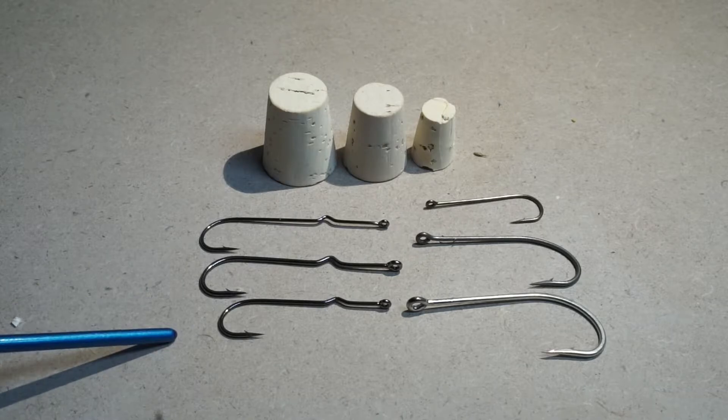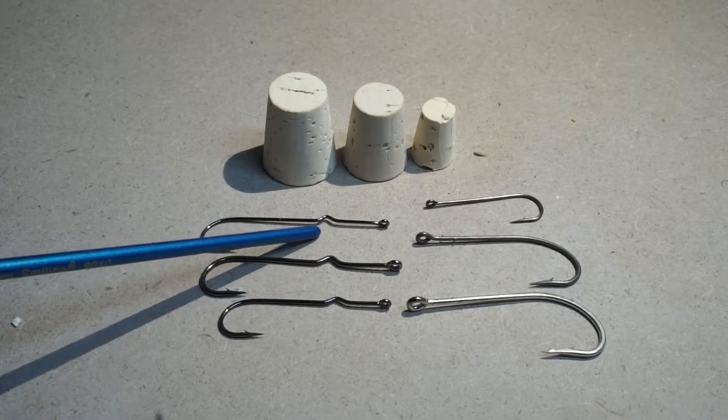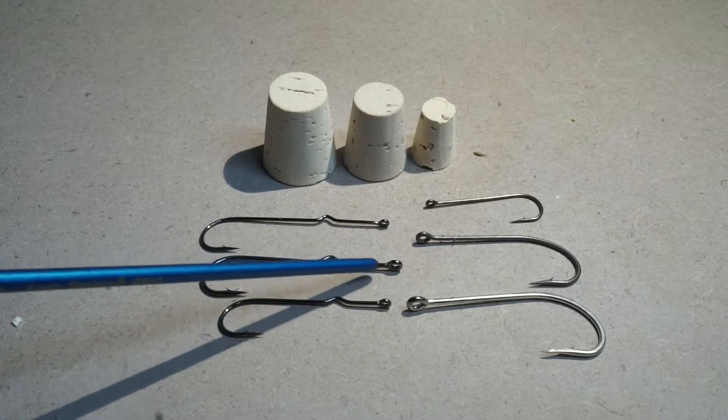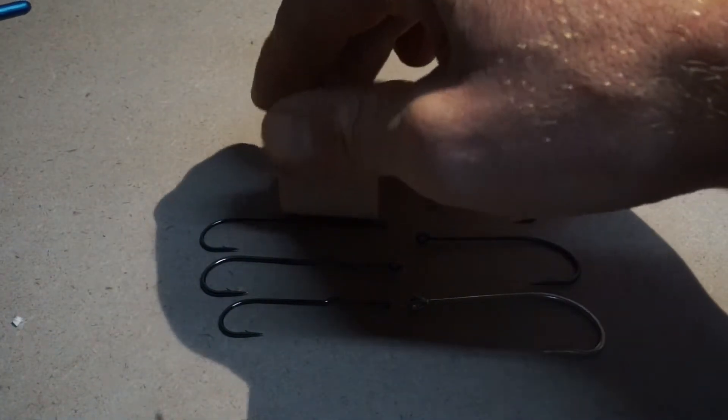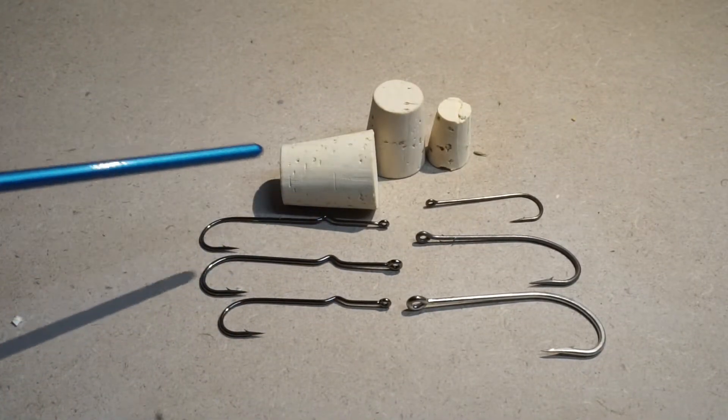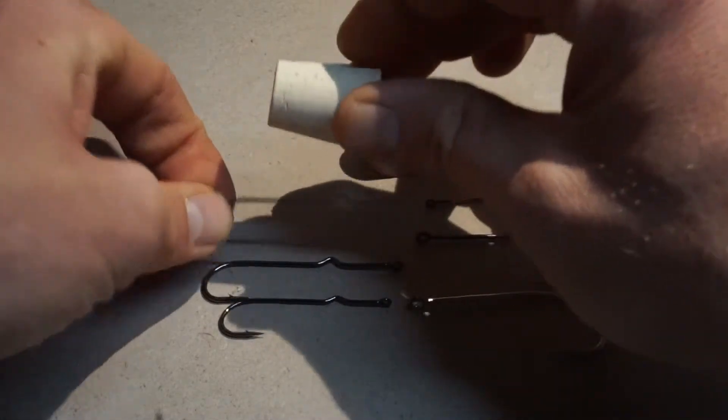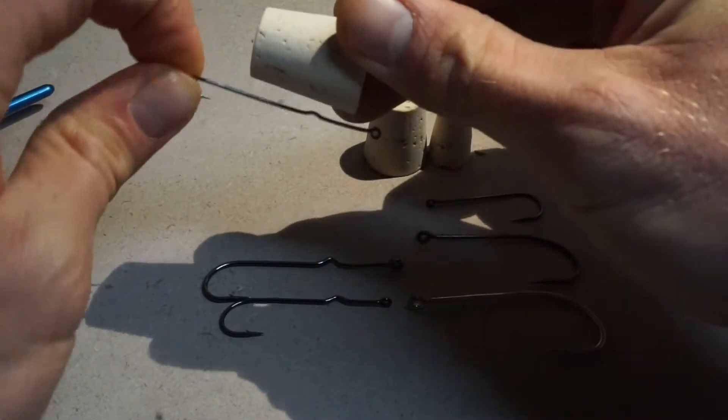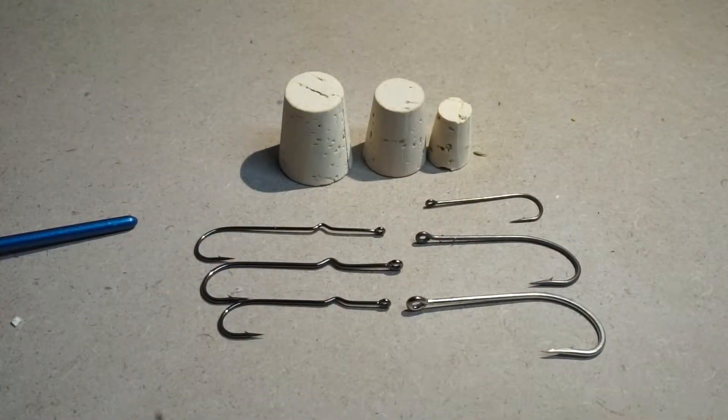So on the left here, I have three specific popper hooks. They have the little bend in them so that when you sit the popper on top of it, when you cut them, you sit it on top of it, that little channel right there prevents the hook from turning like this inside the popper after you've got it all assembled.